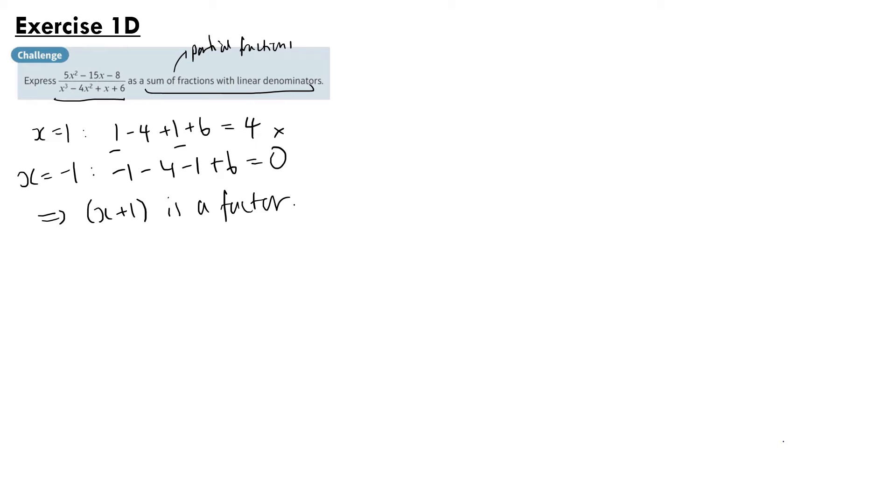Now we can use polynomial long division with x plus 1 on the outside and our denominator on the inside. Our first term on top is going to be x squared which will give us our x cubed and then plus x squared here. Taking these terms away, we have minus 5x squared here, taking the x down.